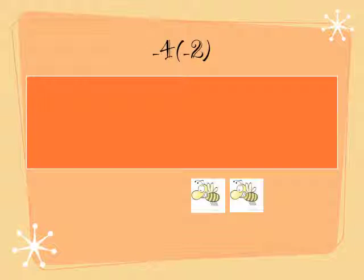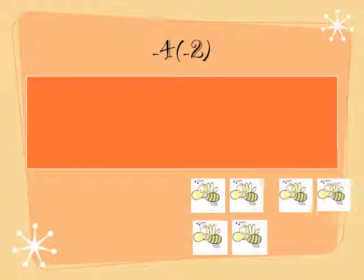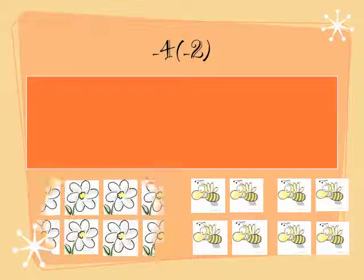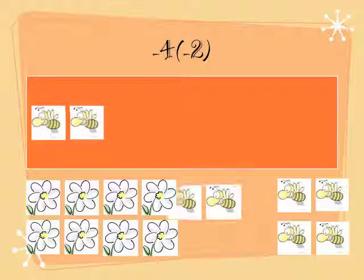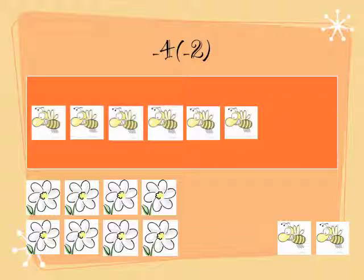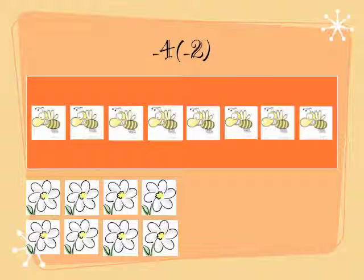Our final and last problem is negative 4 times negative 2. There are 4 sets of bees with 2 bees in each. They all flew away and there are 8 flowers left.